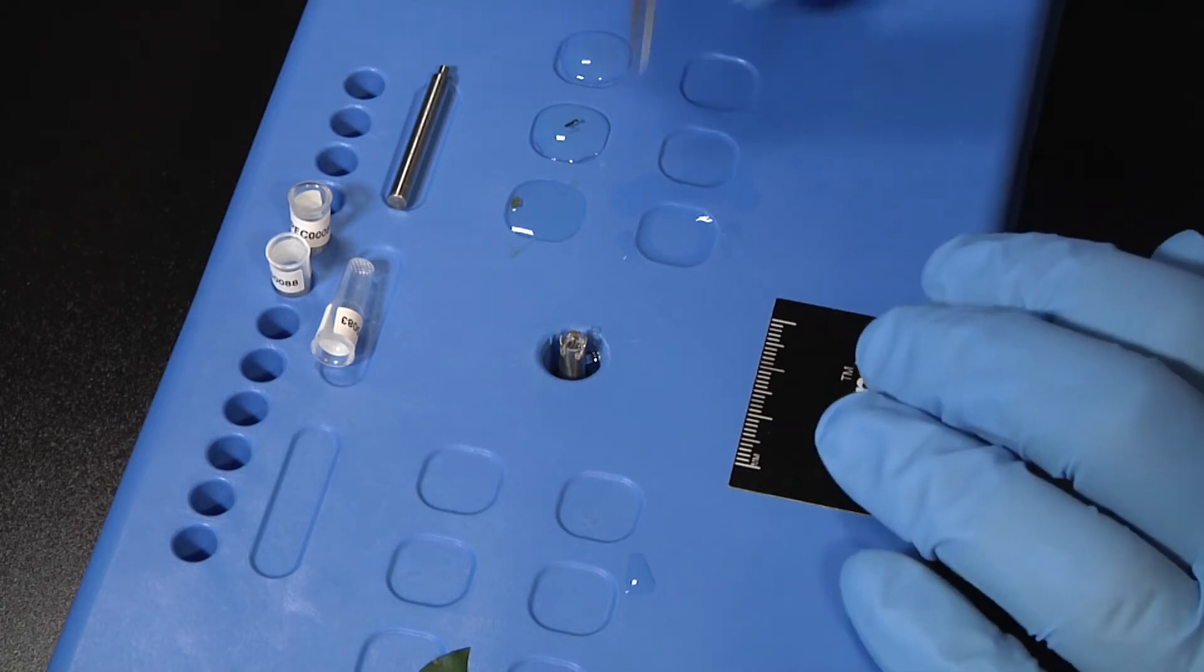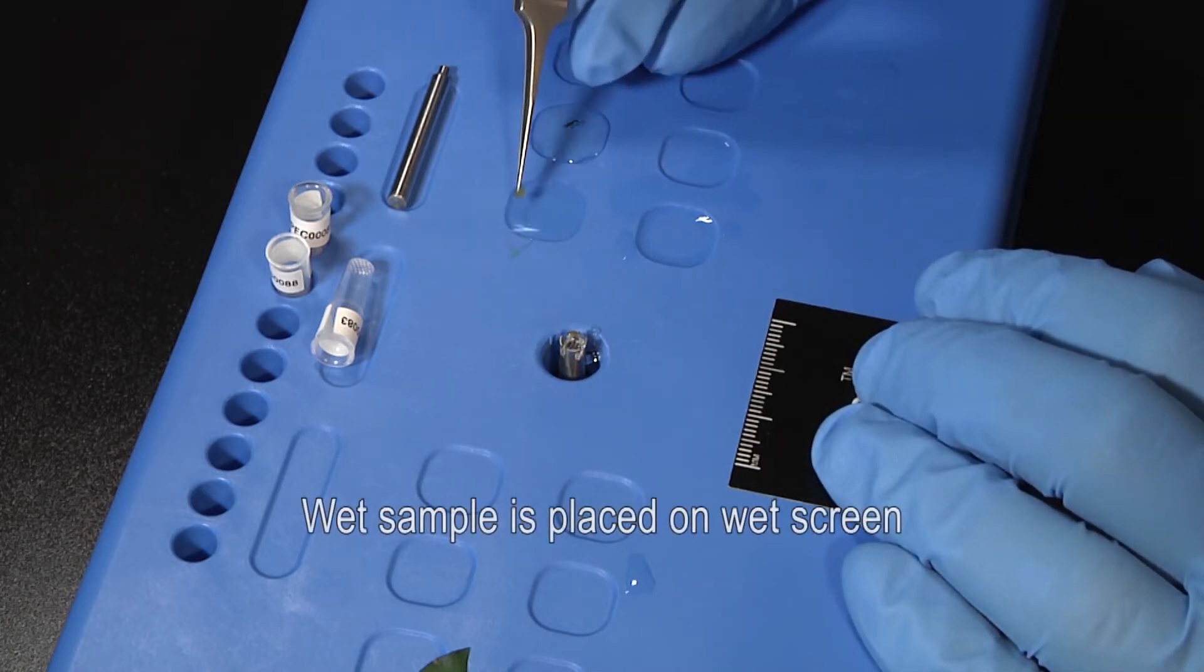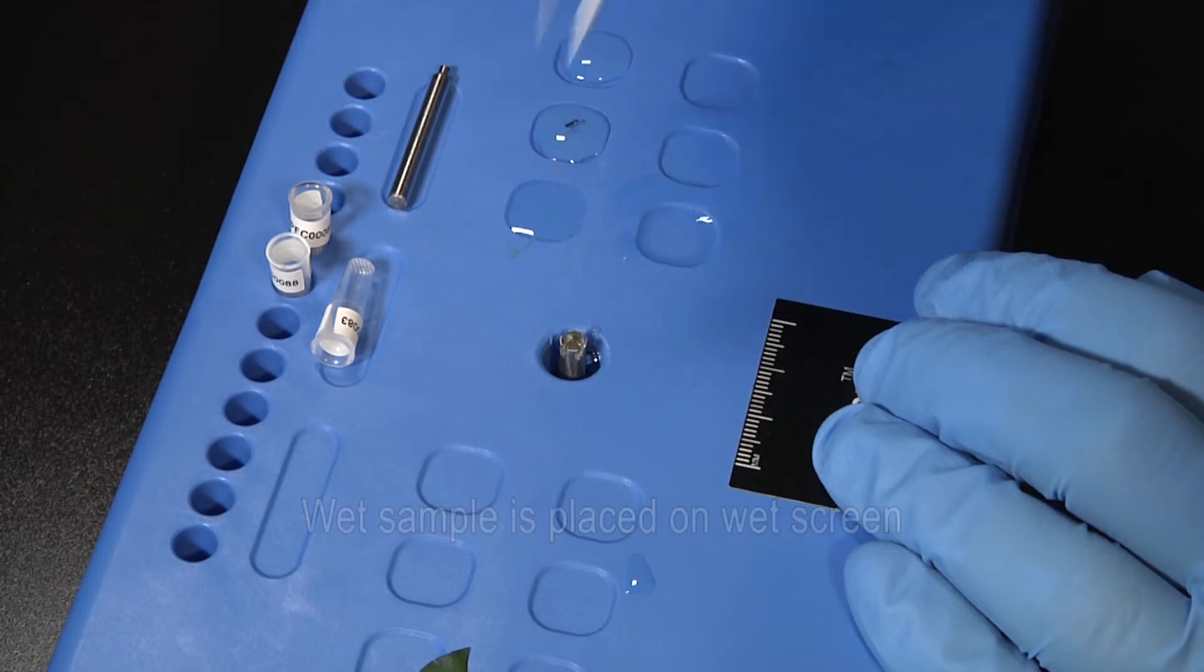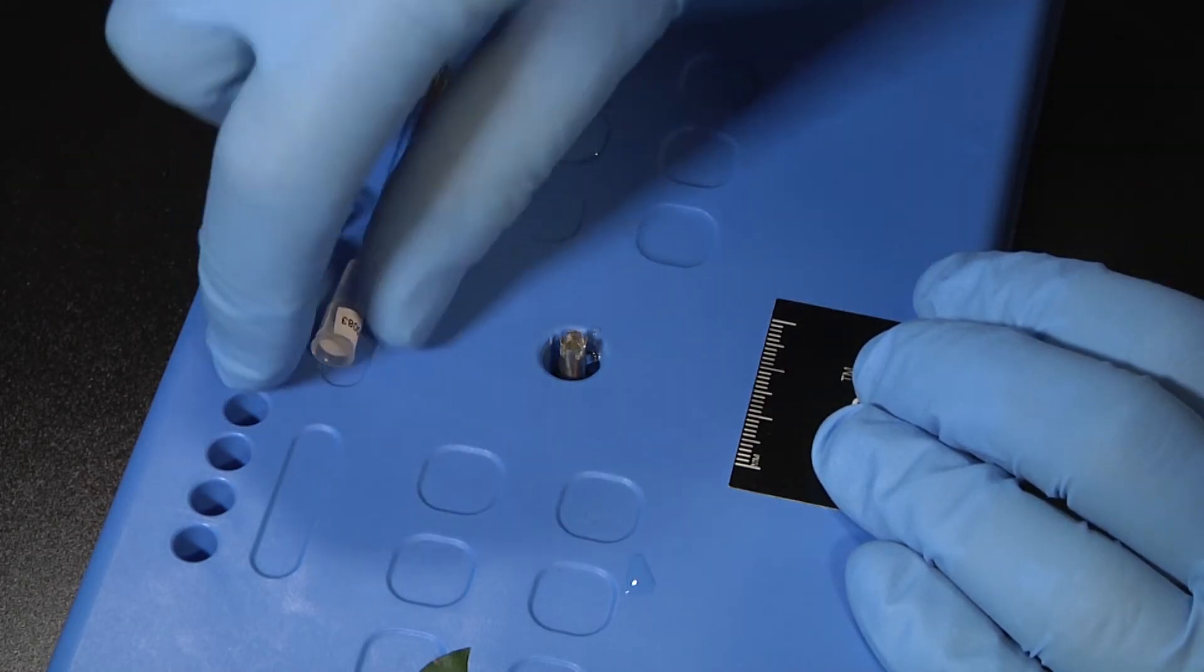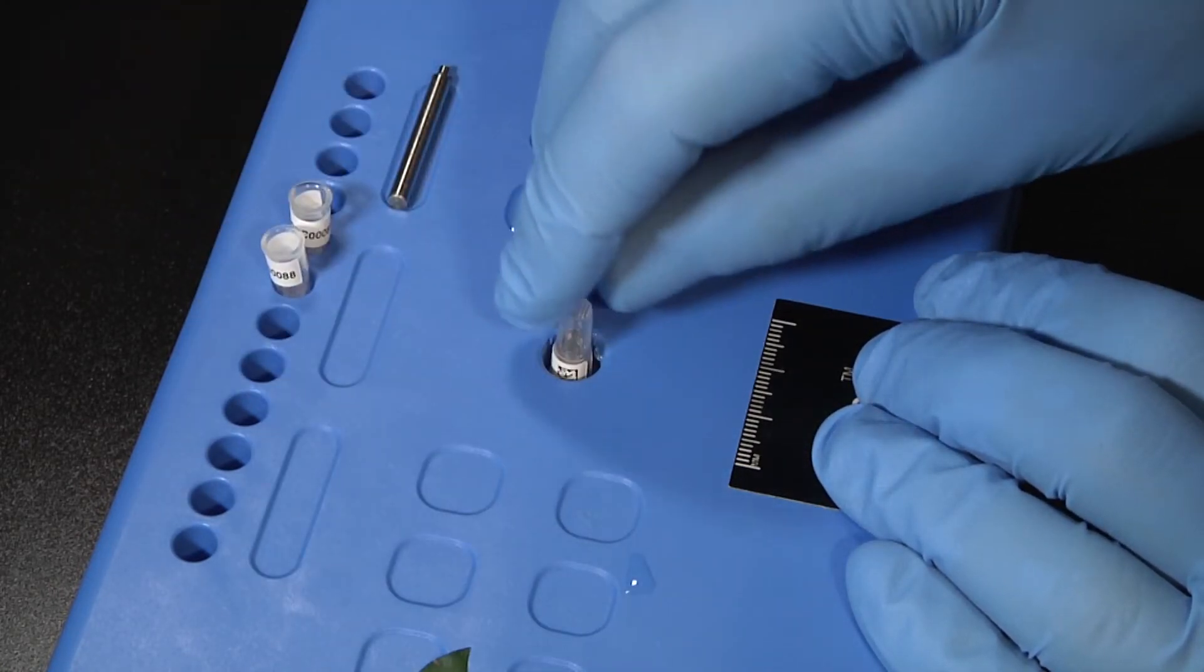A wet sample is placed into the concave cavity of the screen. An empty capsule is then slid over the screen and insertion tool, and is rotated counterclockwise to remove the screen.